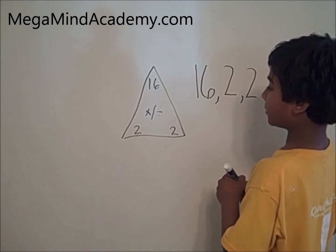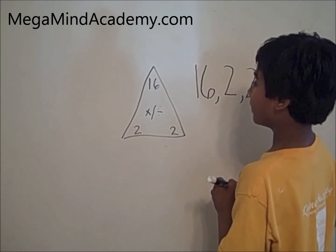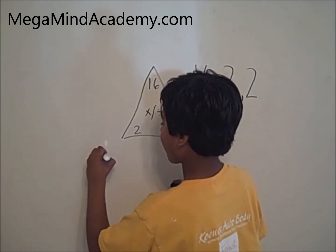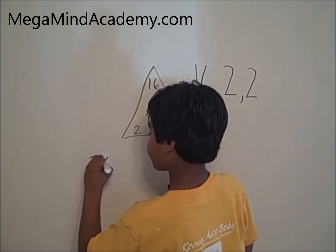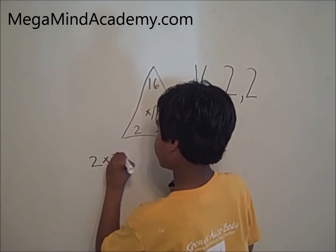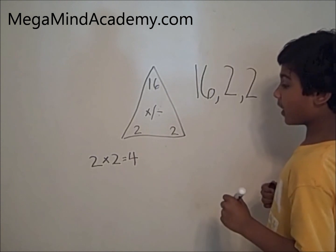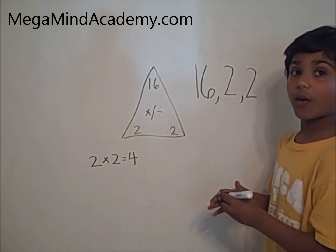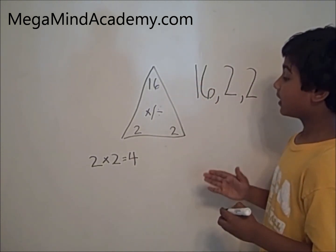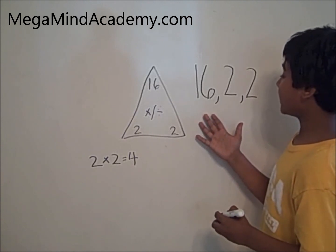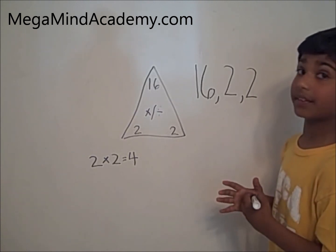Now let's do multiplication and division relation among the numbers. 2 times 2 is 4. Wait a minute! 4 is not 16. So 16, 2, and 2 is not a fact family.